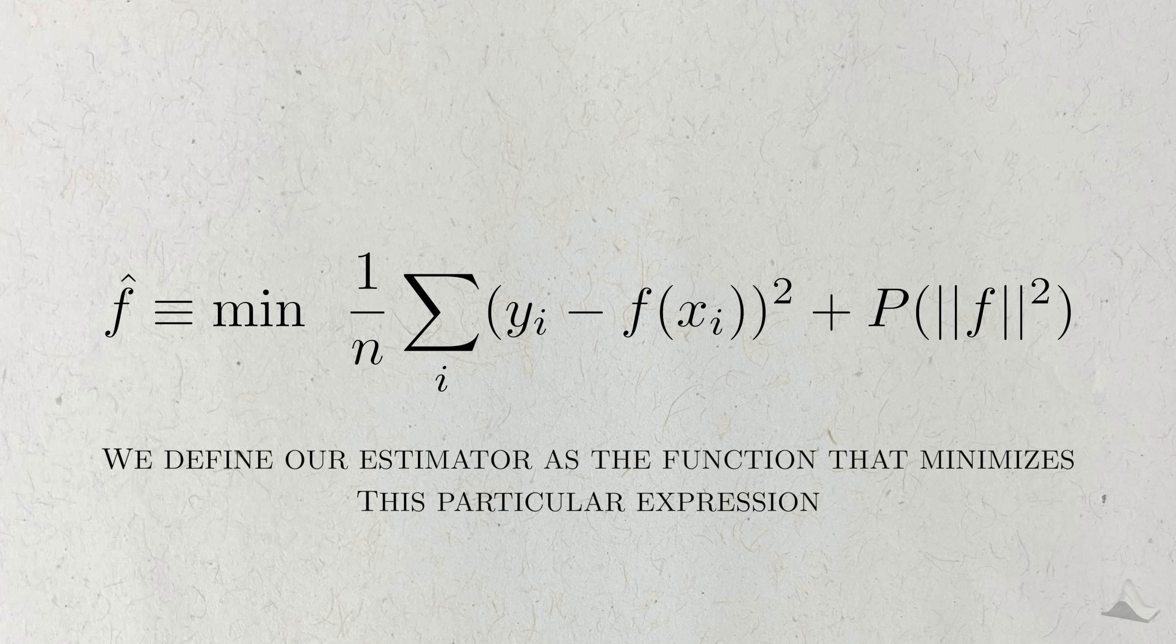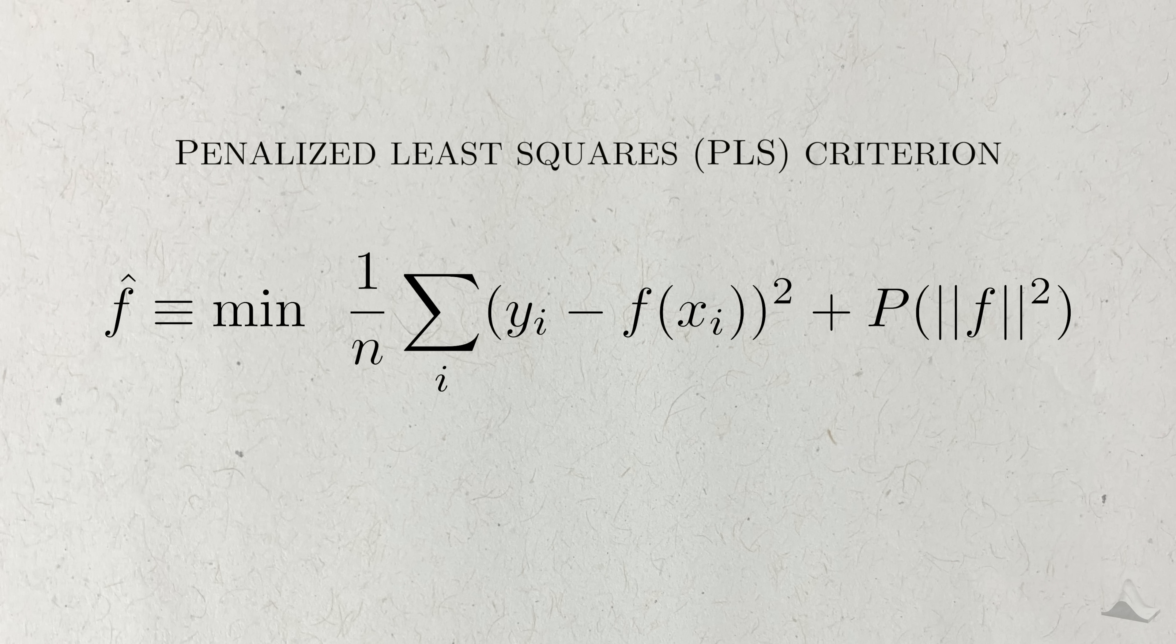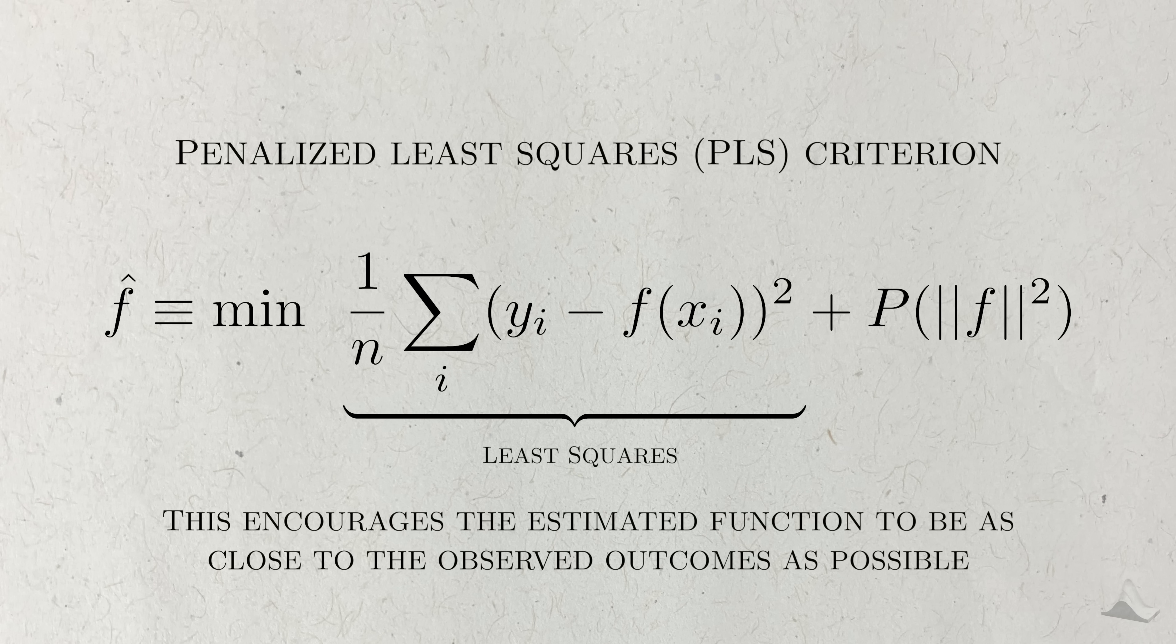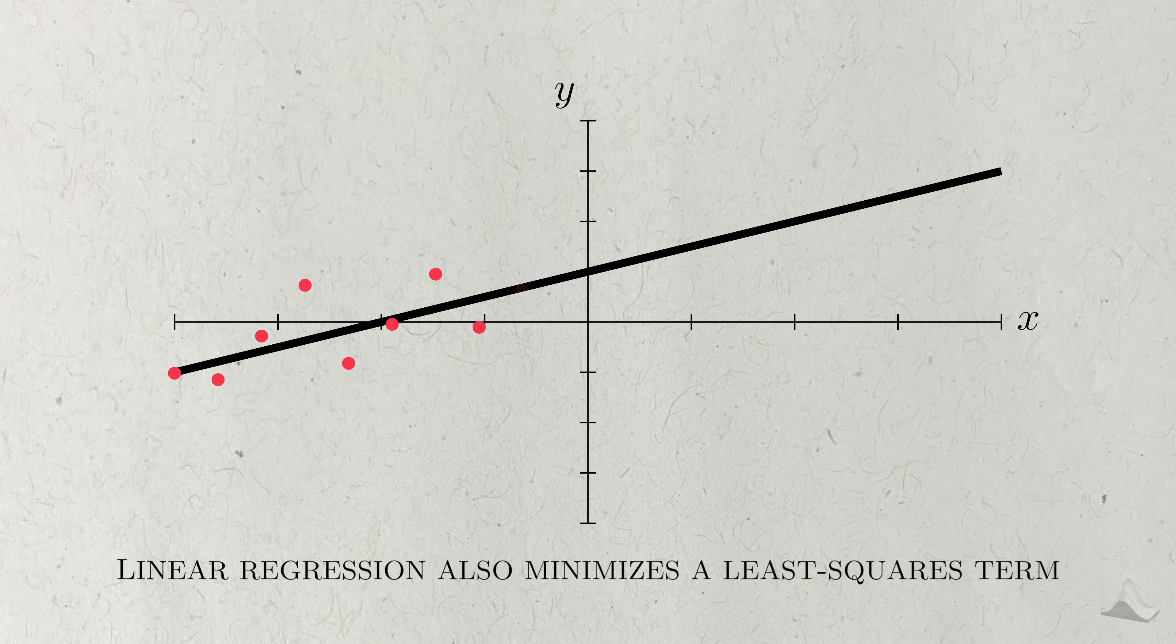The classic way to define it is the function that minimizes what's called the penalized least squares criterion. The criterion is split into two terms, the least squares term and a penalty term. The least squares term indicates that we'd like our estimated function to be as close as possible to the observed outcomes. This is the same criterion we use in linear regression.